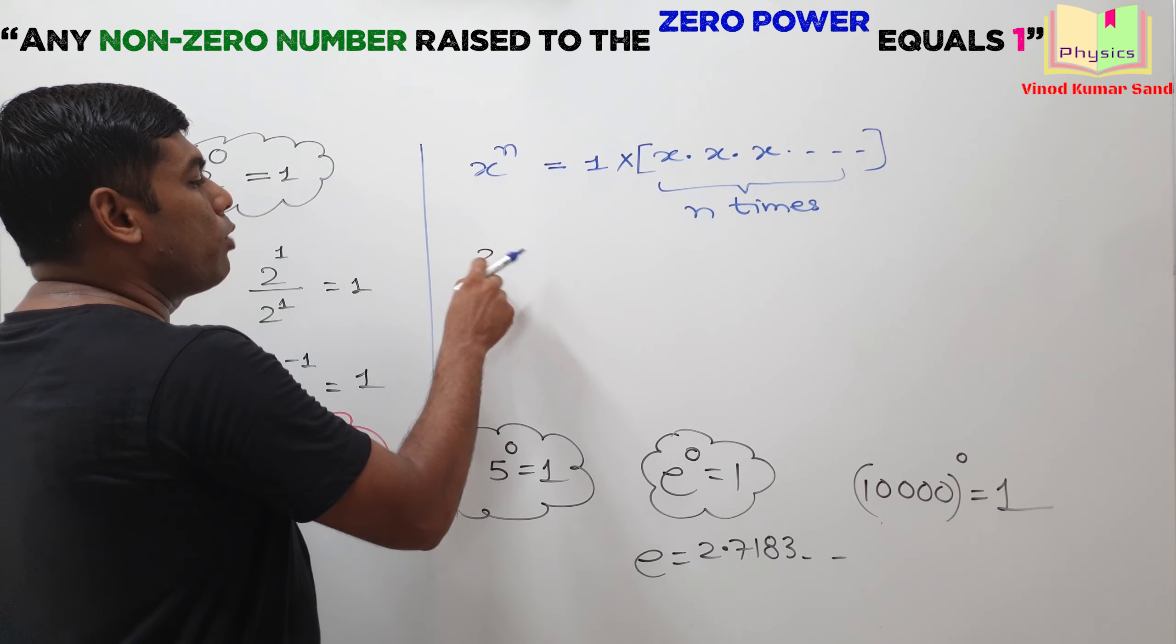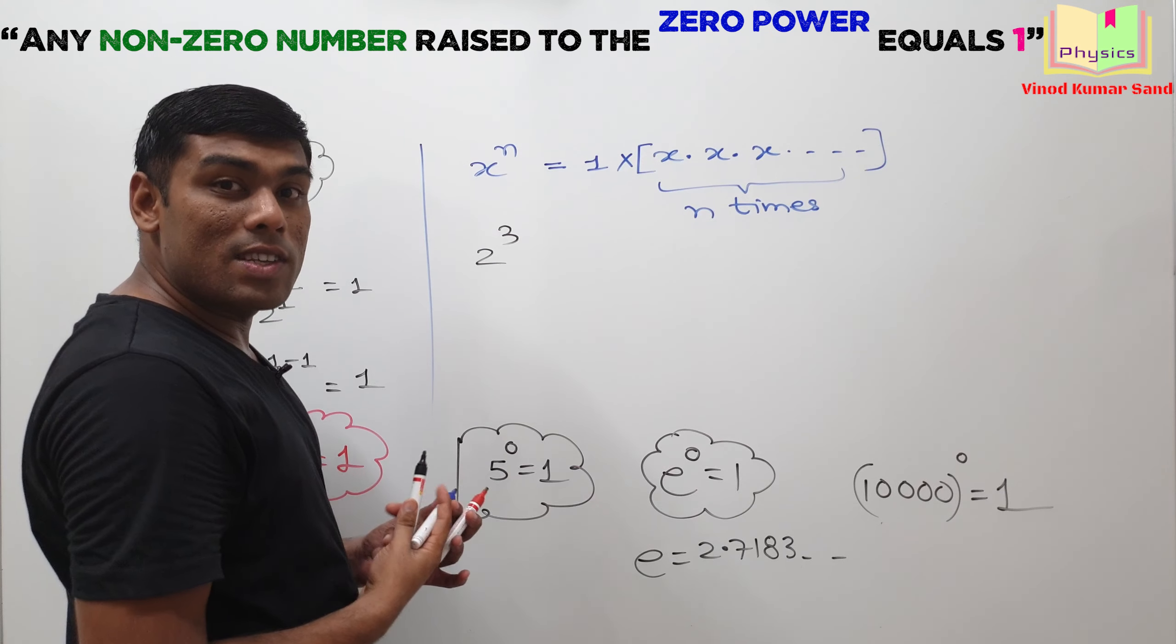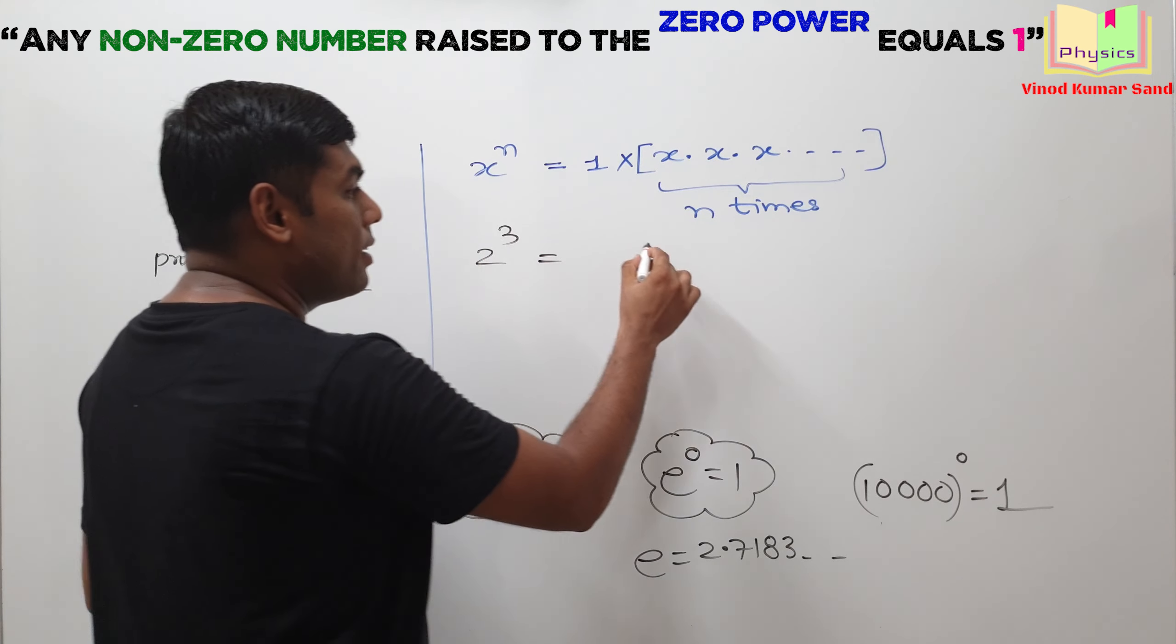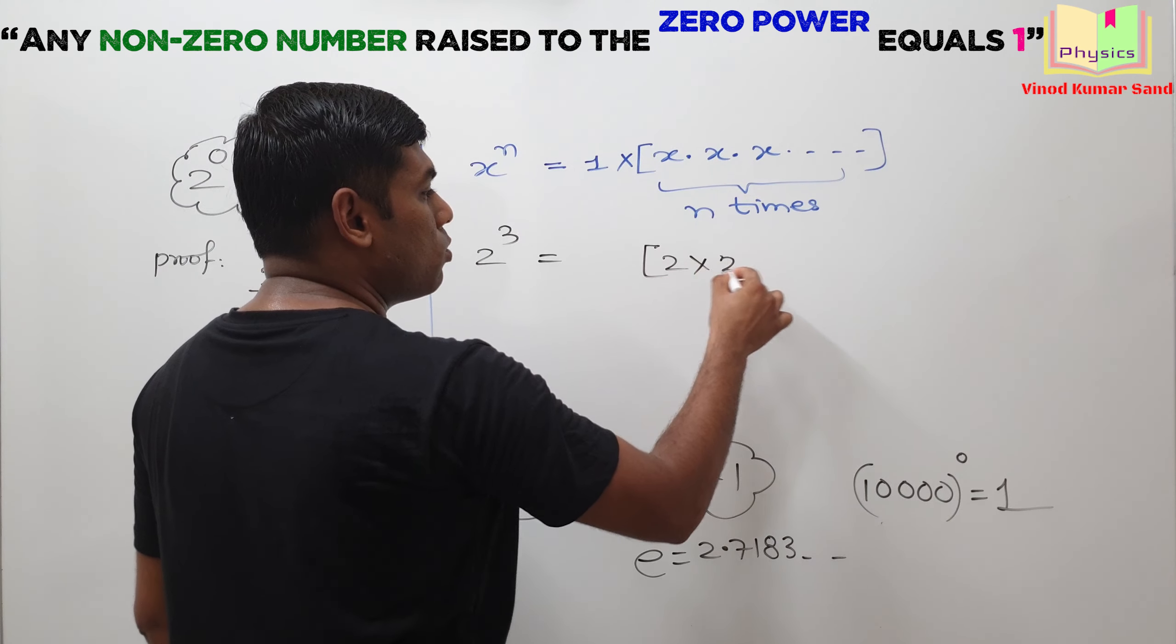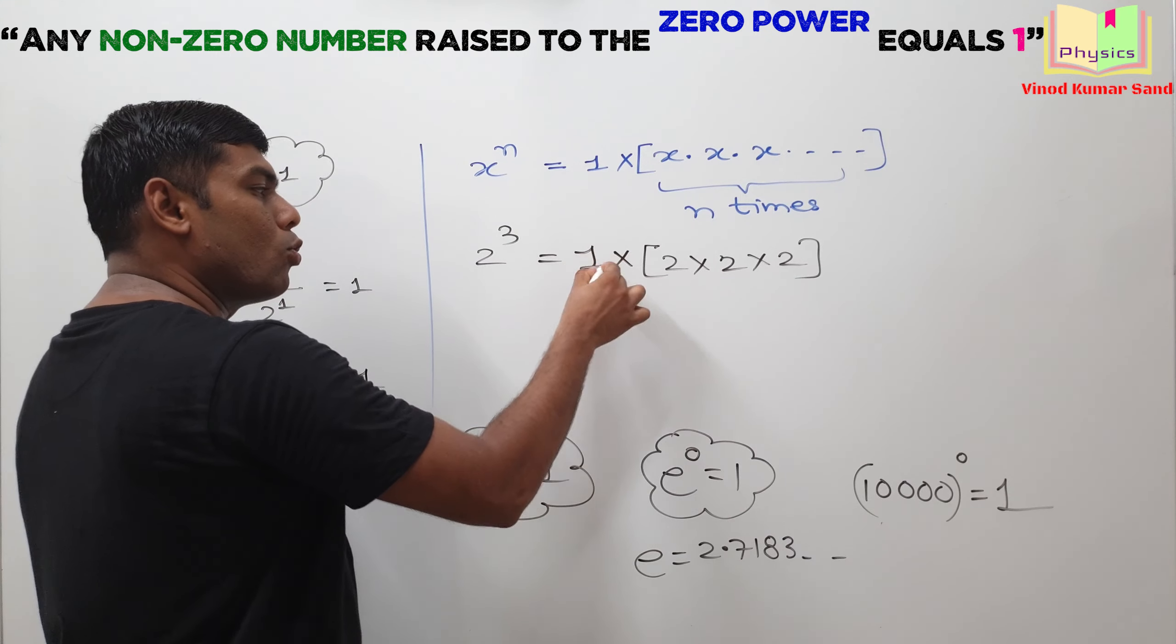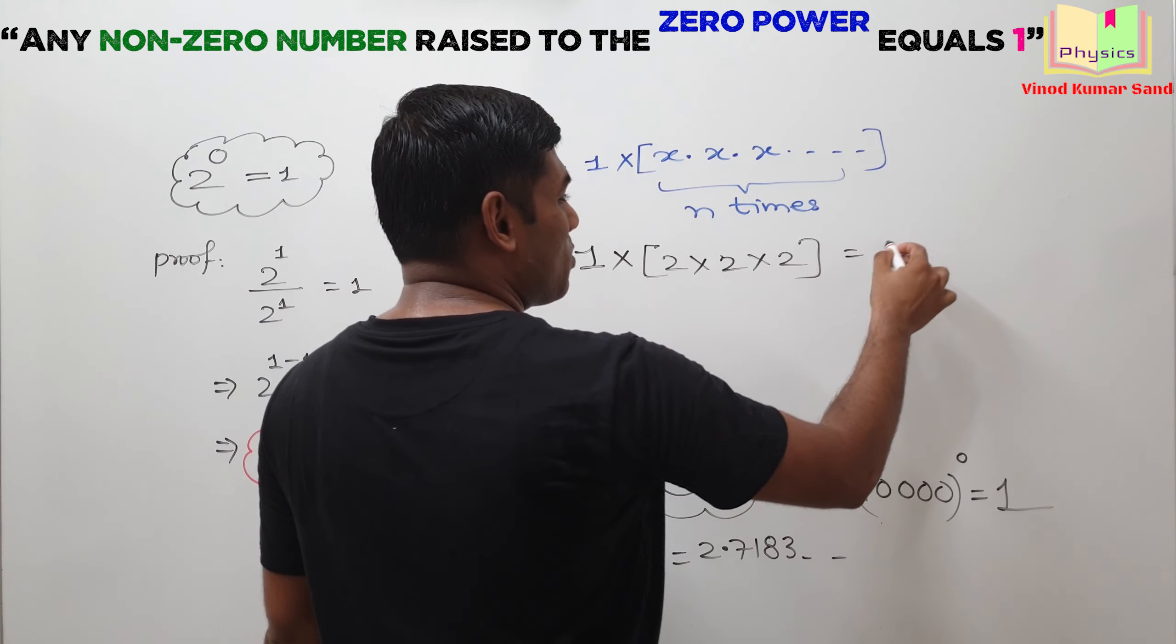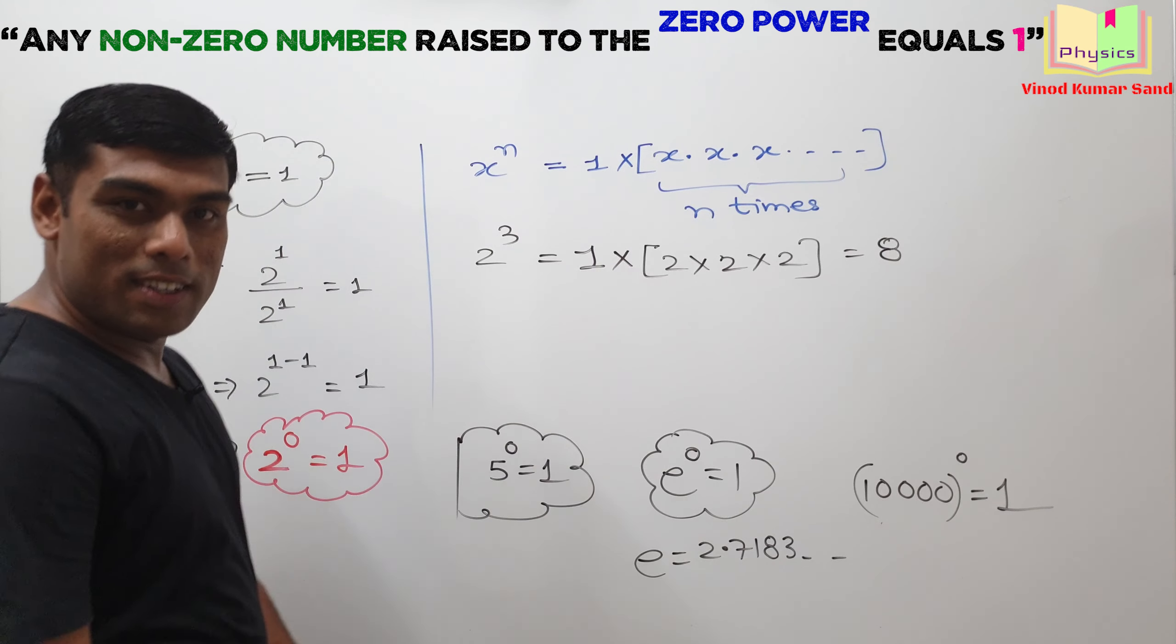For example, you find 2 cube. What does it mean? That 2 is multiplied 3 times, 2 into 2 into 2 with 1. That is the meaning of 2 cube. So, your answer will be equal to 8.